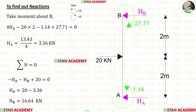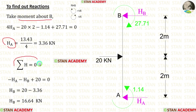Now let us find the reactions. First, let us take column AB. We can find HA by taking moments about B, then apply the rule ΣH = 0 to find HB.